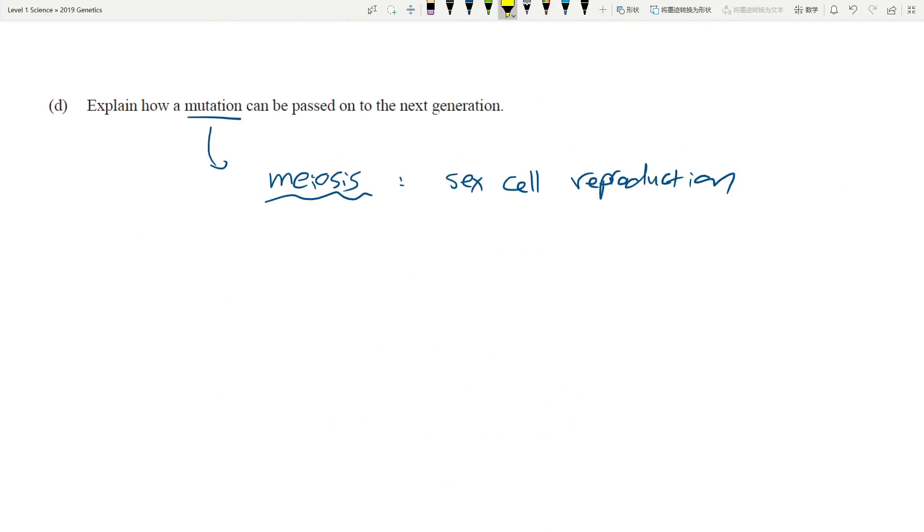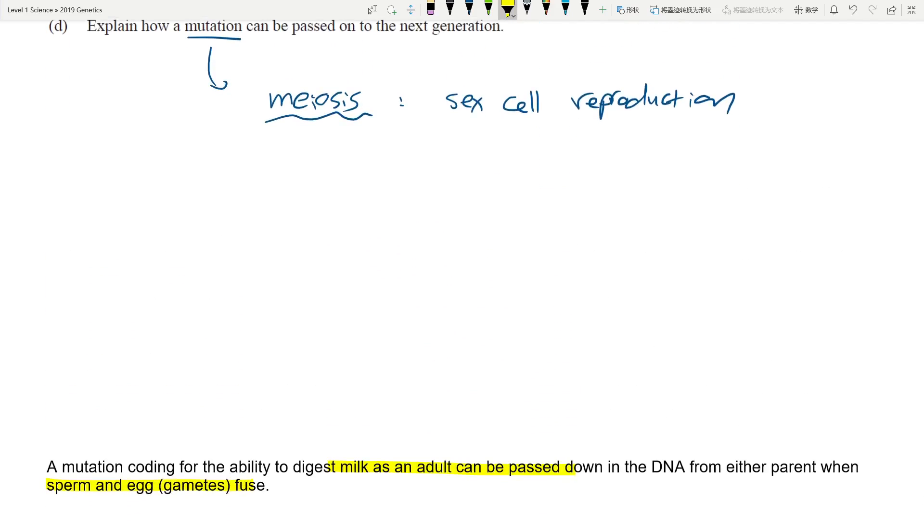Like say if the mutation occurs in the body cell of the individual, then this will not be passed on. This will only stay in the individual. But if this is involved in the production of sex cells, and then the sex cells end up fertilizing each other - fuse - producing an individual, then the offspring will get this particular trait as well.